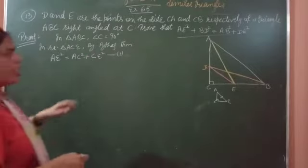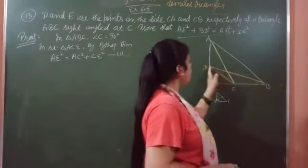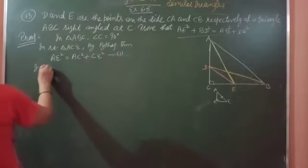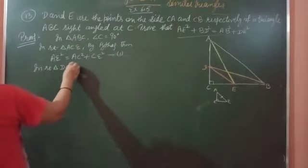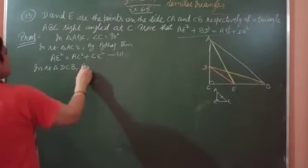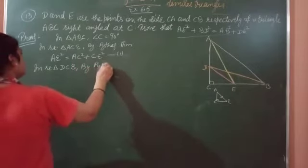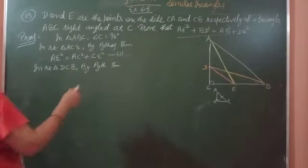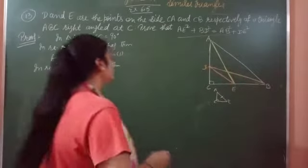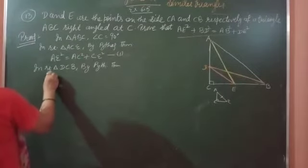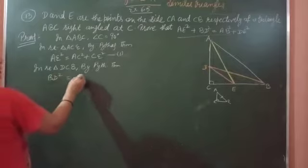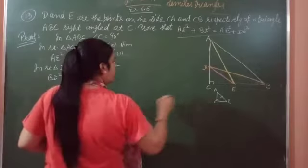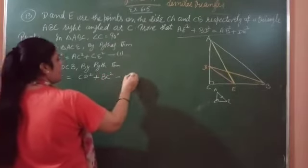Next, we have BD. So BD is from triangle BDC. In right triangle BCD by same Pythagoras theorem, hypotenuse is BD. BD square is equal to CD square plus BC square. This is our second equation.